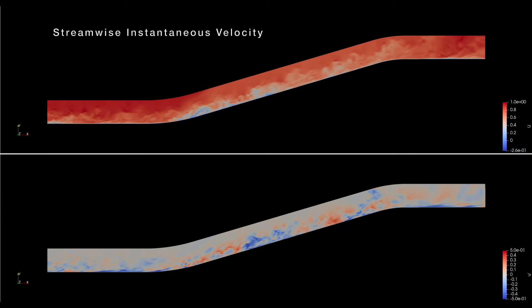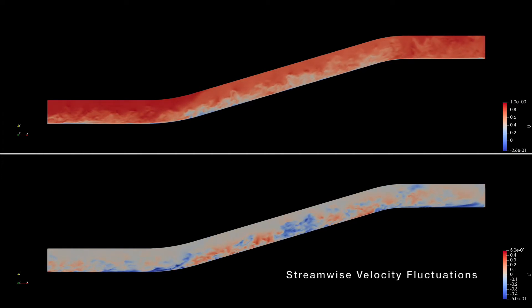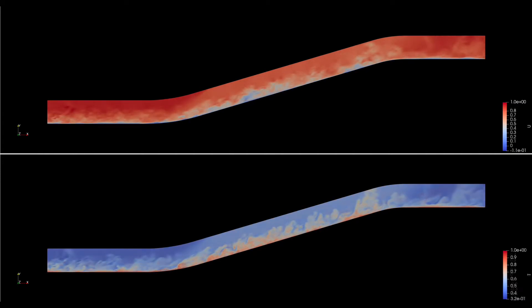Now moving on to flow visualization. Here we focus on the streamwise instantaneous velocity at the top. At the bottom we see the streamwise velocity fluctuations towards the end, as I previously alluded, a much more organized flow.